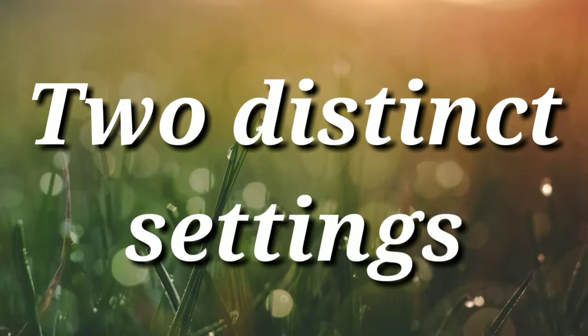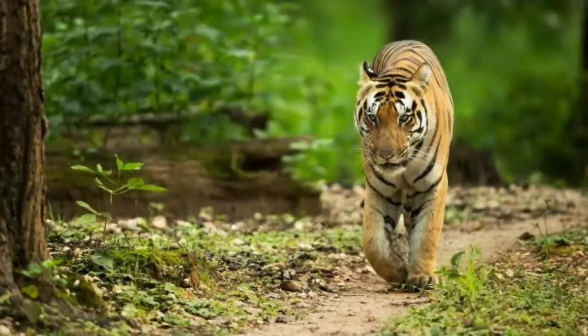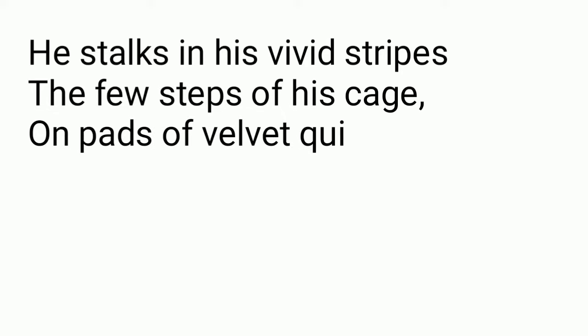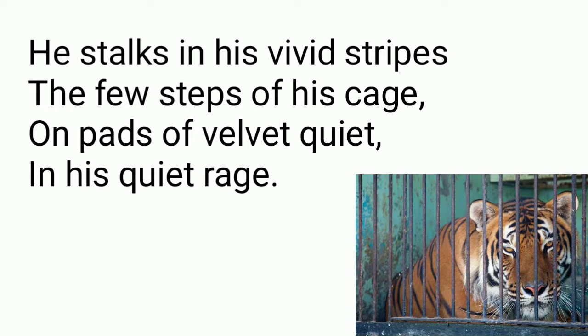The poem has two distinct settings. The first setting is the zoo where the tiger is kept in a cage, and the second setting is the natural wild habitat of the tiger where it actually belongs. The first stanza goes like this: 'He stalks in his vivid stripes the few steps of his cage, on the paths of velvet quiet in his quiet rage.' The poet wants to say that the tiger confined in the zoo moves around in the cage under his bright colored skin.